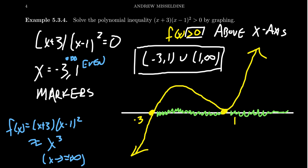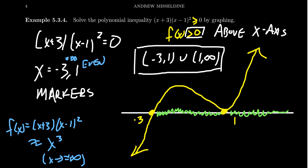Zero is not greater than zero. Now if we had modified this problem — if we look for the points which are greater than or equal to zero — then negative three would actually be part of the solution, and one would also be part of the solution. In fact, the solution would change to be [−3, ∞). We never include infinity. So if we want greater than or equal to zero, we get [−3, ∞). But sticking with the original problem — greater than zero — we get (−3, 1) union (1, ∞).